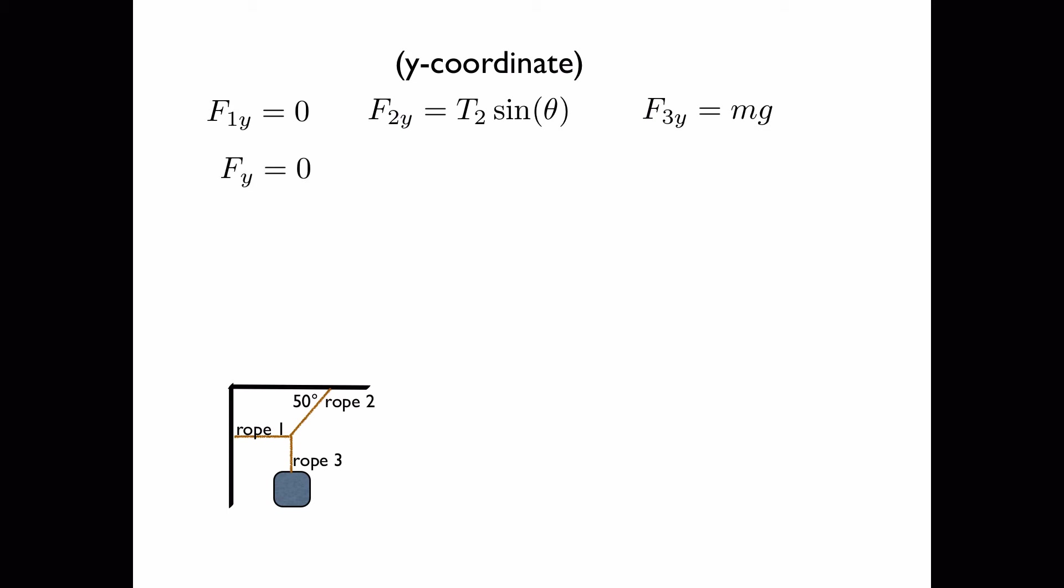Because this is an equilibrium, the total vertical component is equal to zero. So the sum is equal to zero, which implies that the tension in rope 2 times the sine of the angle is negative mg.